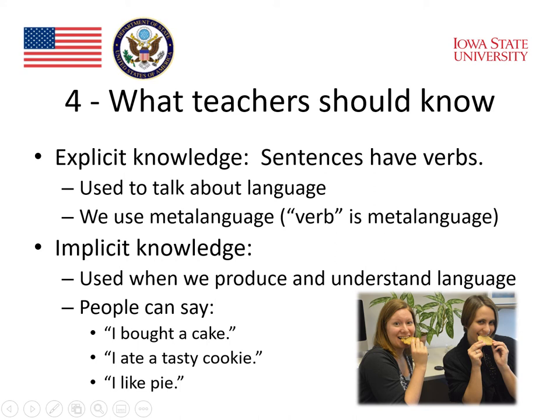Second, there's implicit knowledge. That's the knowledge that's used when we produce and understand language. People can say 'I bought a cake,' 'I ate a tasty cookie,' or 'I like pie.' All of those sentences can be said without being able to name which word in the sentence is a verb. You can use language knowledge without having explicit language knowledge to talk about the language.